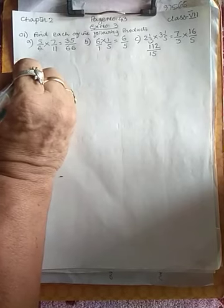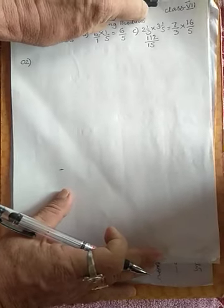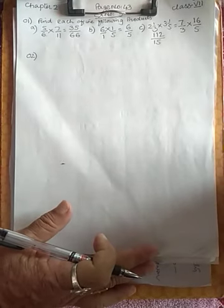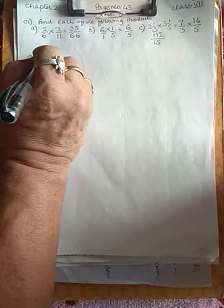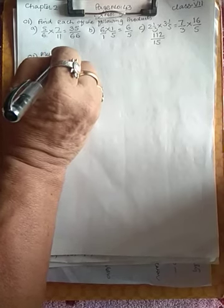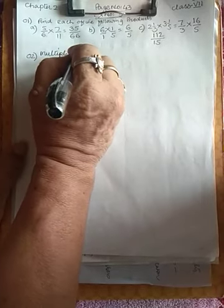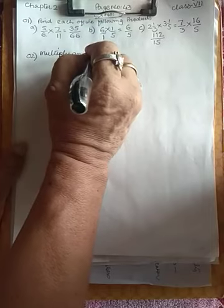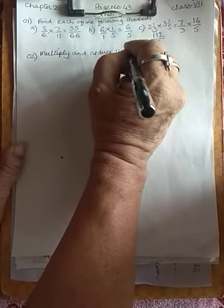Now second question: multiply and reduce to lowest form. We have to multiply and then reduce to lowest form.